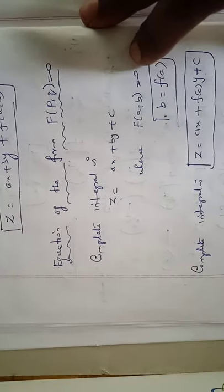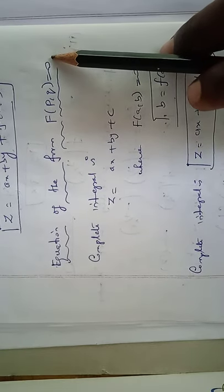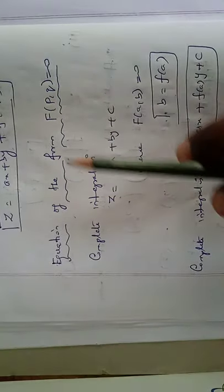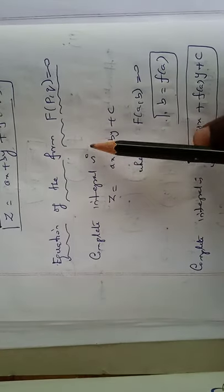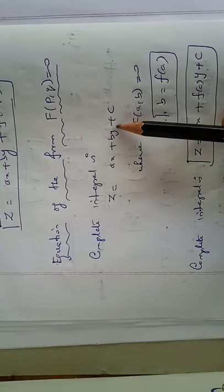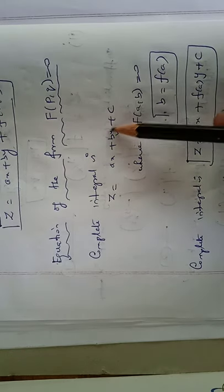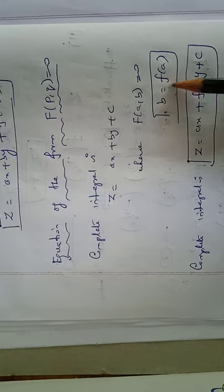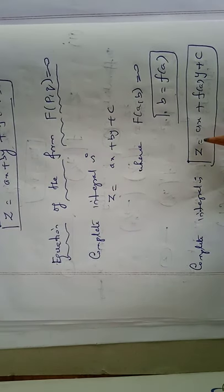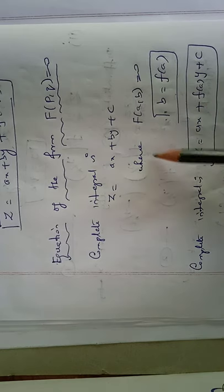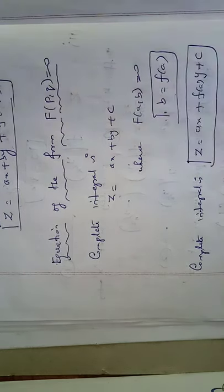The second type: equation of the form f(p, q) equal to 0. The complete integral is z equal to ax plus by plus c. Here b can be expressed in terms of a, so b equal to f(a). The complete integral becomes z equal to ax plus f(a)y plus c.